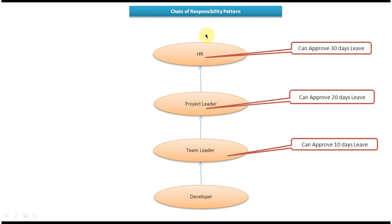Here you can see a developer who is reporting to a team leader, the team leader reporting to a project leader, and the project leader reporting to HR. The team leader can approve 10 days leave, the project leader can approve 20 days leave, and HR can approve 30 days leave. Suppose a developer wants to take 25 days leave — he will send the request to the team leader, but the team leader can't approve it.